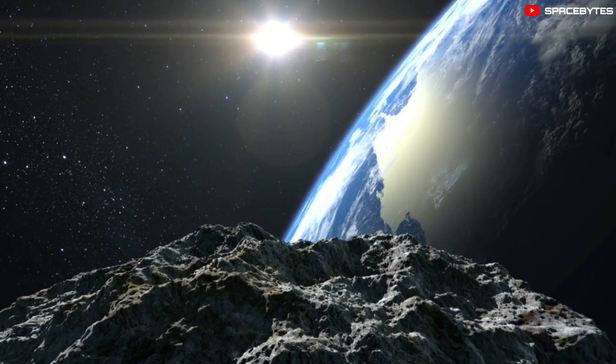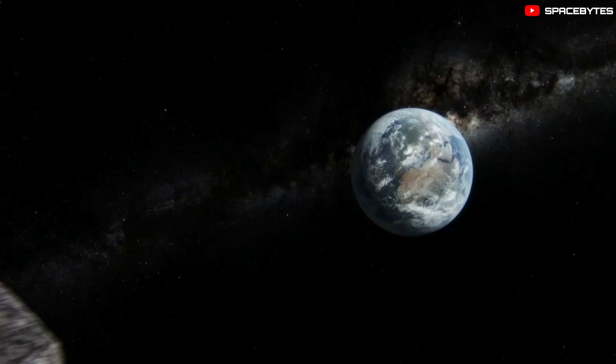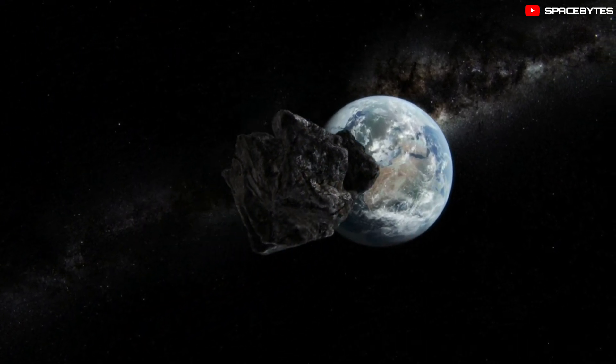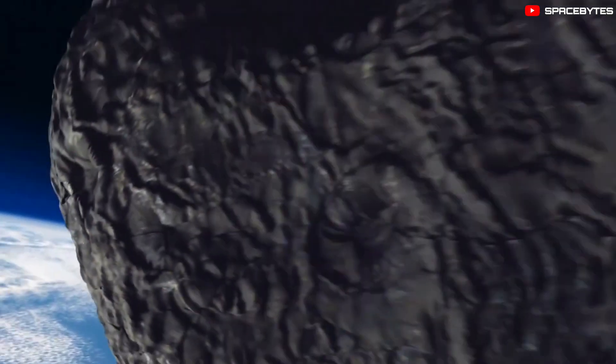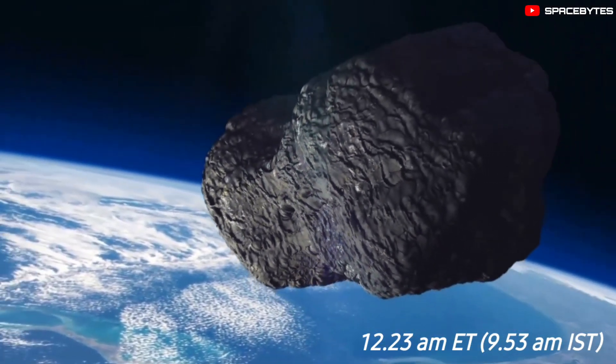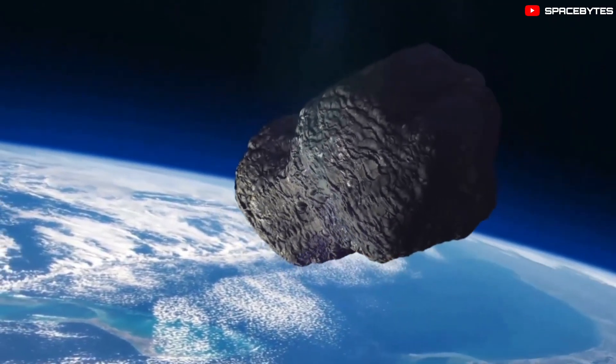An asteroid wider in size than two football fields made a close flyby to Earth on Thursday, August 4. The asteroid was expected to zoom past Earth at 12:23 a.m. ET, 9:53 a.m. IST, as per agency reports.